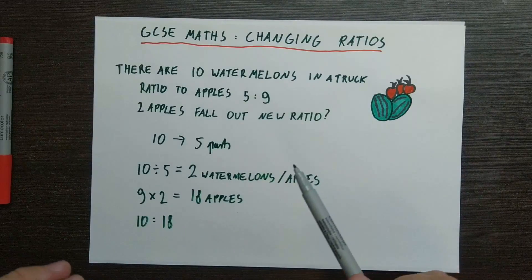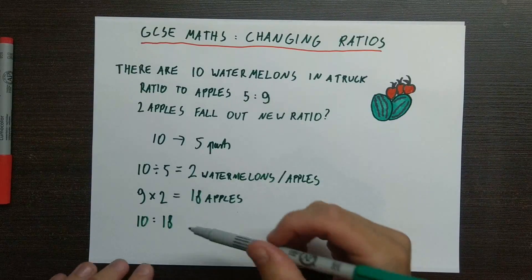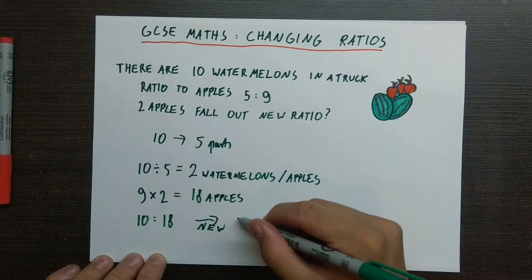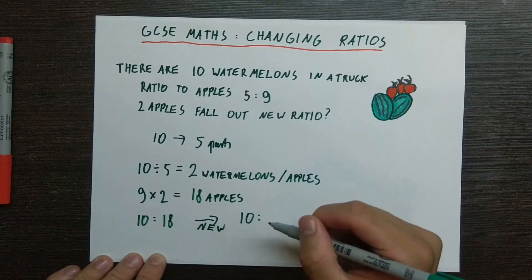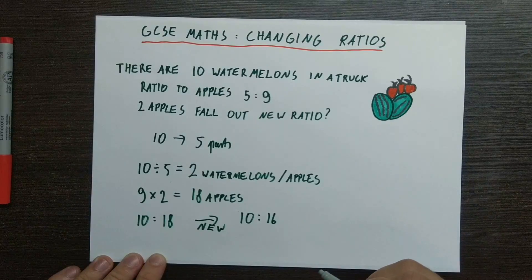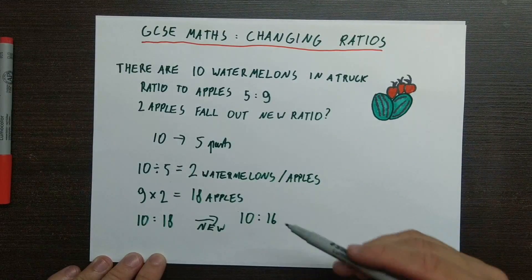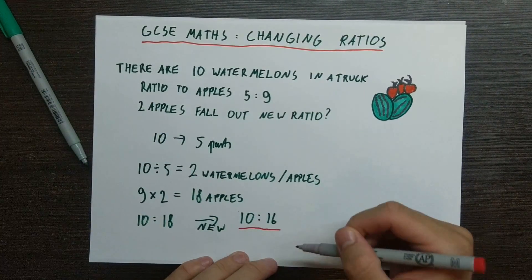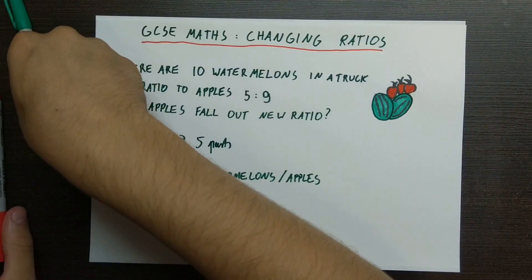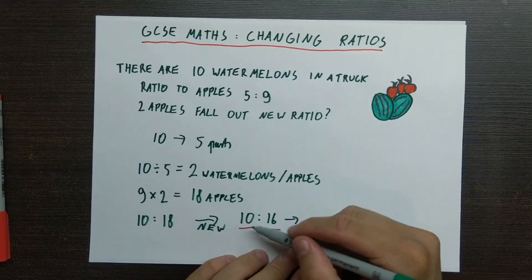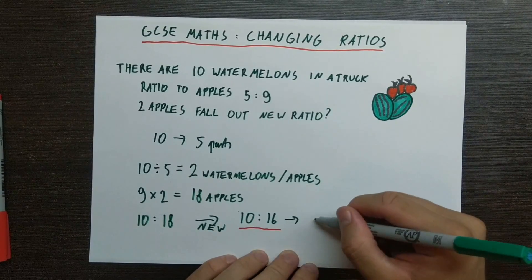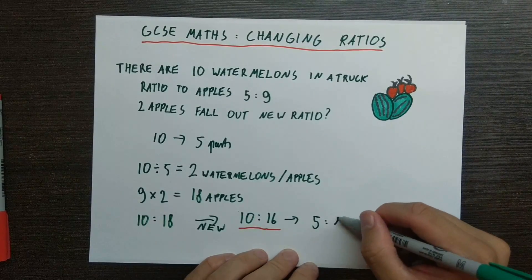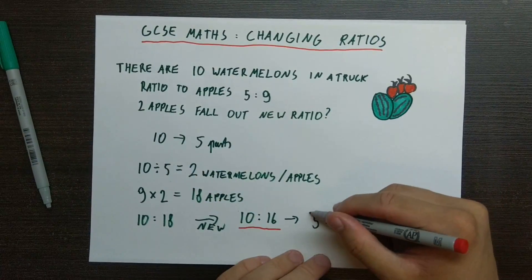So now we know that there were 10 watermelons and 18 apples. We also know that 2 apples fell out. So the new ratio is 10 watermelons to 16 apples, because the watermelons stay the same and 2 apples fell out. That's the new ratio. However, we need to simplify it, and the simplest form is if we divide both sides by 2 — giving us 5 to 8.